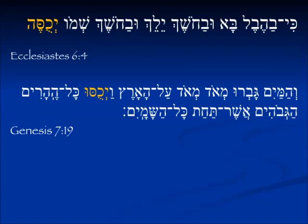Here are two forms of the verb kasah, meaning 'to cover' — in this case, 'to be covered.' Speaking of the unborn child, it says 'v'choshekh shmo yechuseh' — 'in darkness his name is covered.' Kasah is a verb that ends in hey, so you're going to see the change in the vowel under the samech. In Genesis 7:19, a third masculine plural form of the same verb — the hey is missing, following the normal rules for verbs that end in hey — speaking of the flood: 'v'yikhusu kol heharim hagvohim,' and all the high mountains were covered.